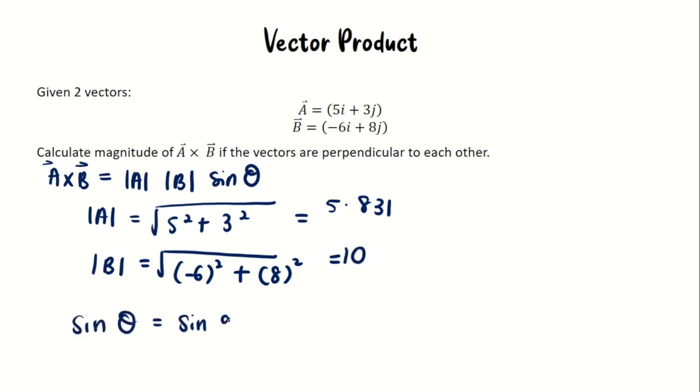Please remember when it says that the vectors are perpendicular to each other, this means θ equals 90 degrees, so sin θ or sin 90 will equal to 1. The final answer for A × B, or the vector product between A cross B, will be 58.31. That's all, thank you for watching.